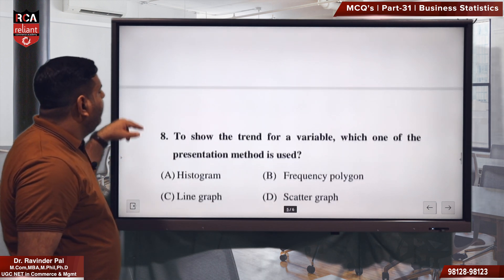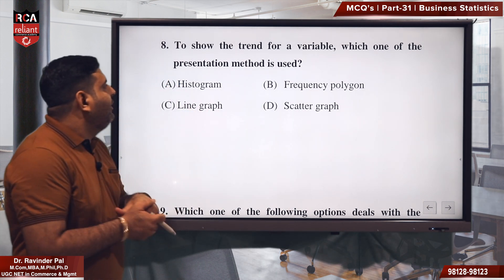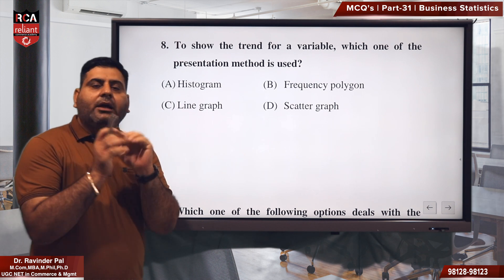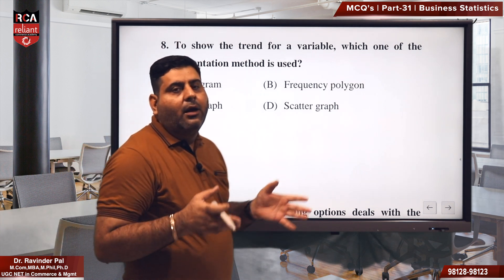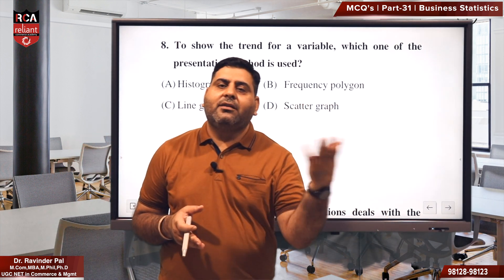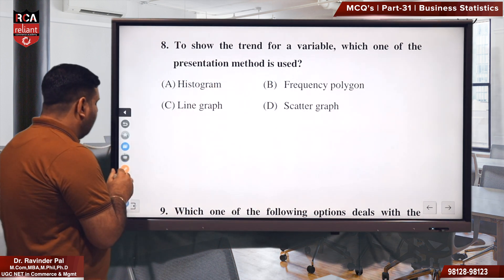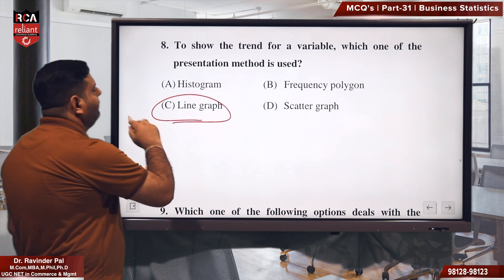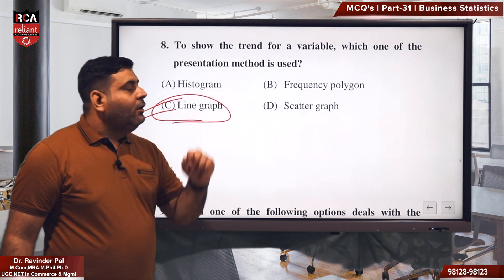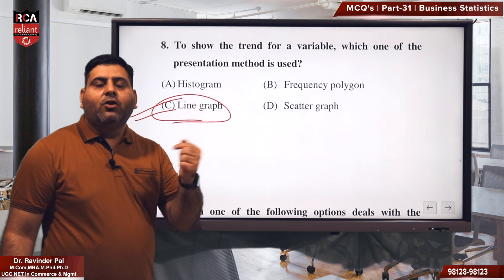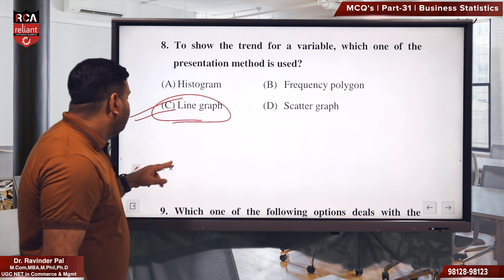Eighth question: to show the trend of a variable, which presentation method is used? Suppose a corporate company wants to see what the graph of their sales over the past 10 years looks like — in that case the best way is a line graph. The line graph is the best method when you want to see the trend of anything, whether it is increasing or decreasing.